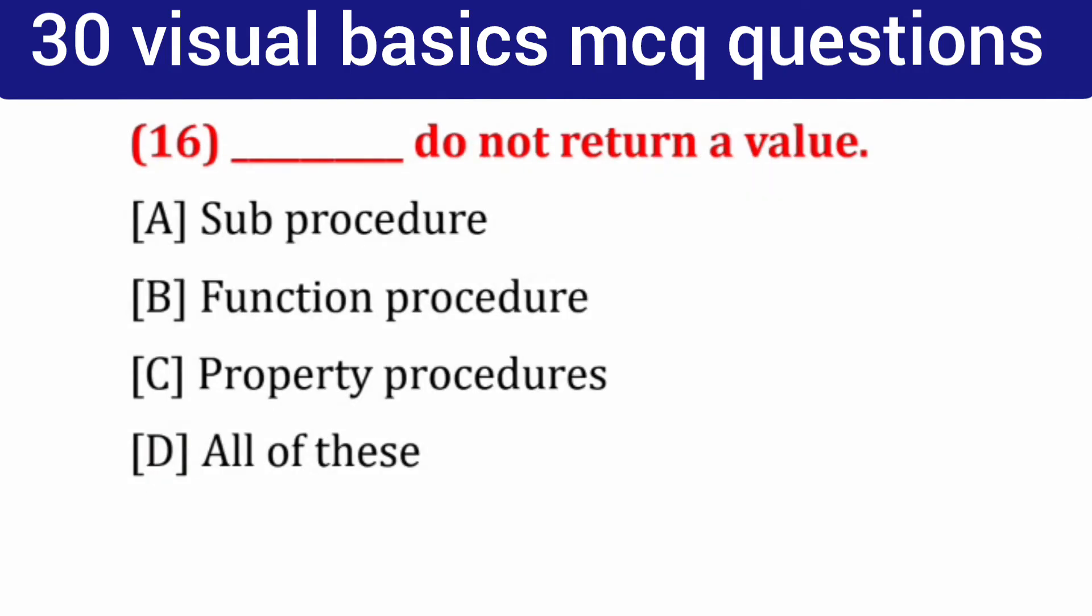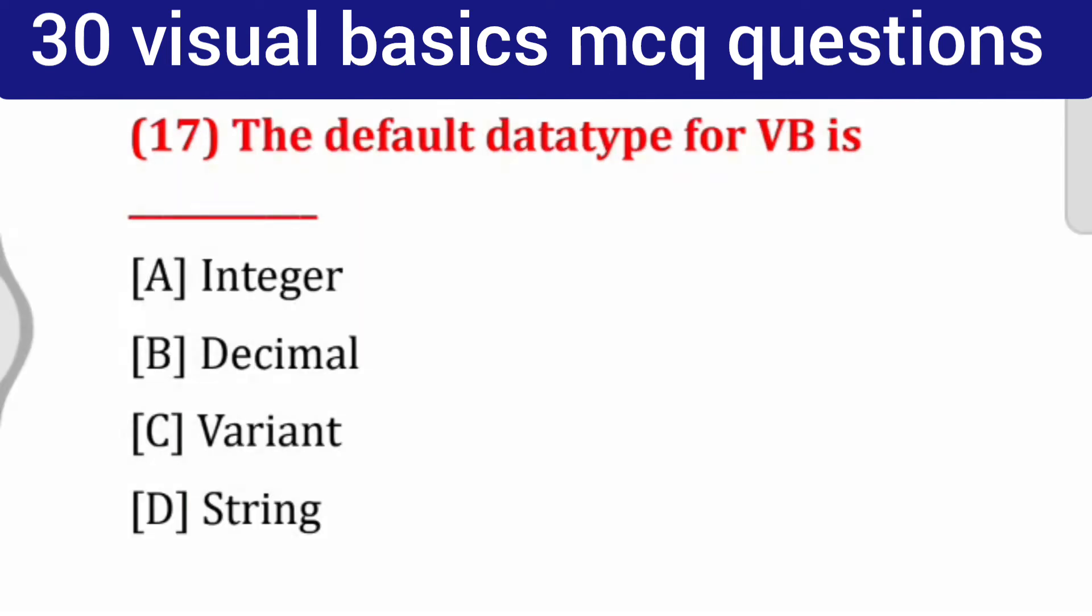Question number 16: ___ do not return a value. Options: sub procedure, function procedure, property procedure, all of these. Correct answer: sub procedure. Question number 17: The default data type for VB is ___. Options: integer, decimal, variant, string. Correct answer: variant.